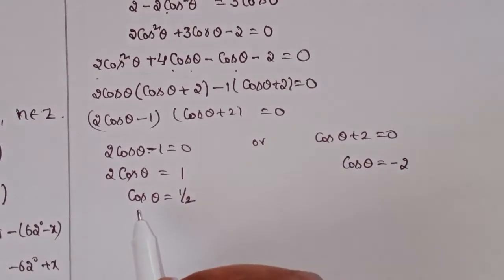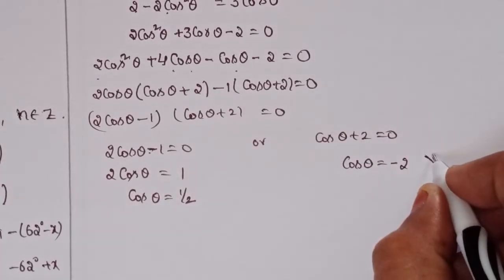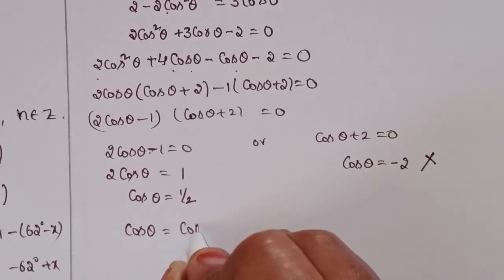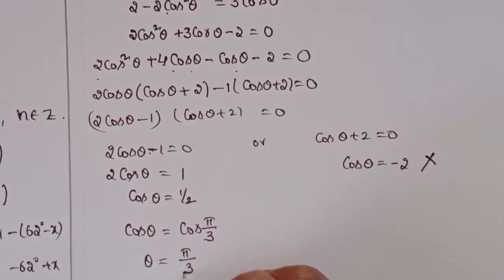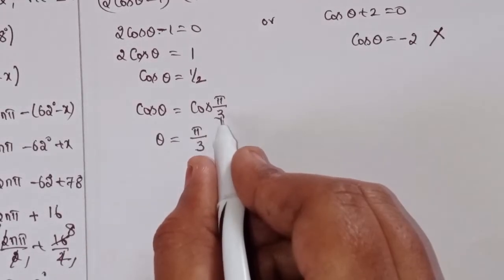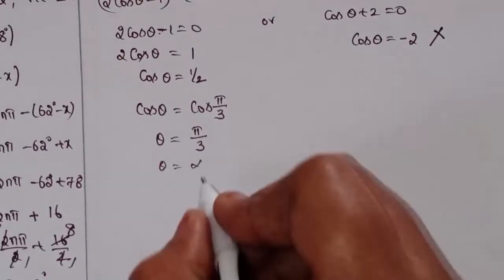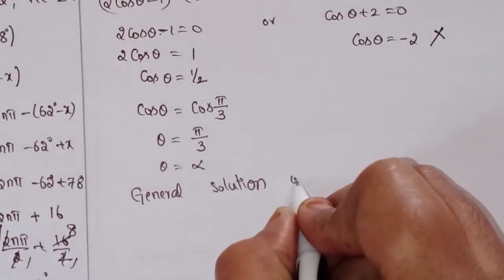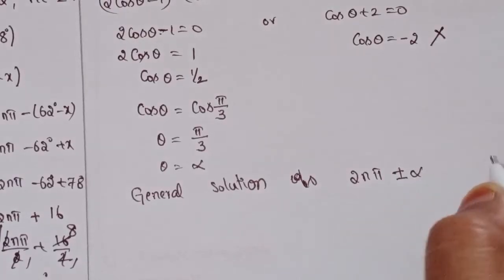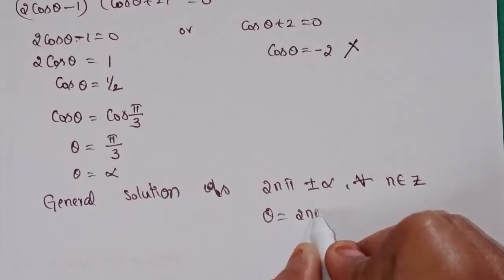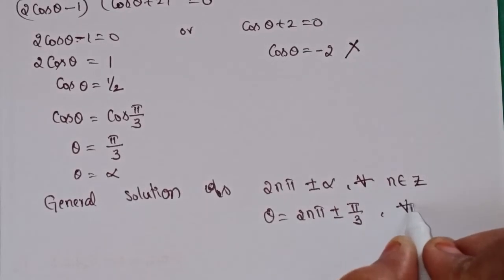Observe that cos value always lies between minus 1 and 1, so we don't take cos theta = minus 2. We go with cos theta = 1/2, which means cos theta = cos(π/3), so alpha = π/3. The general solution is theta = 2nπ ± π/3 for all n belonging to Z.